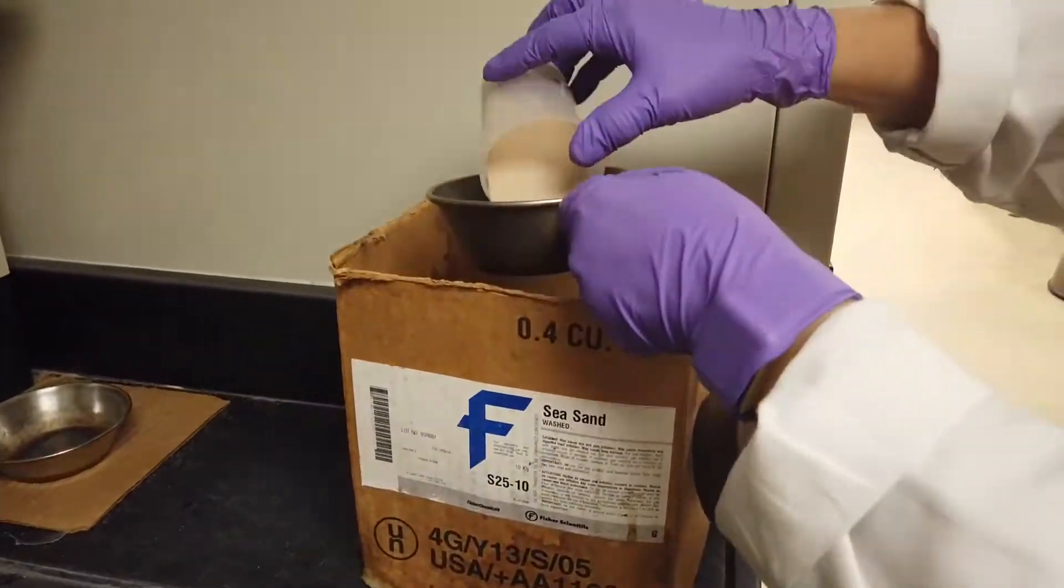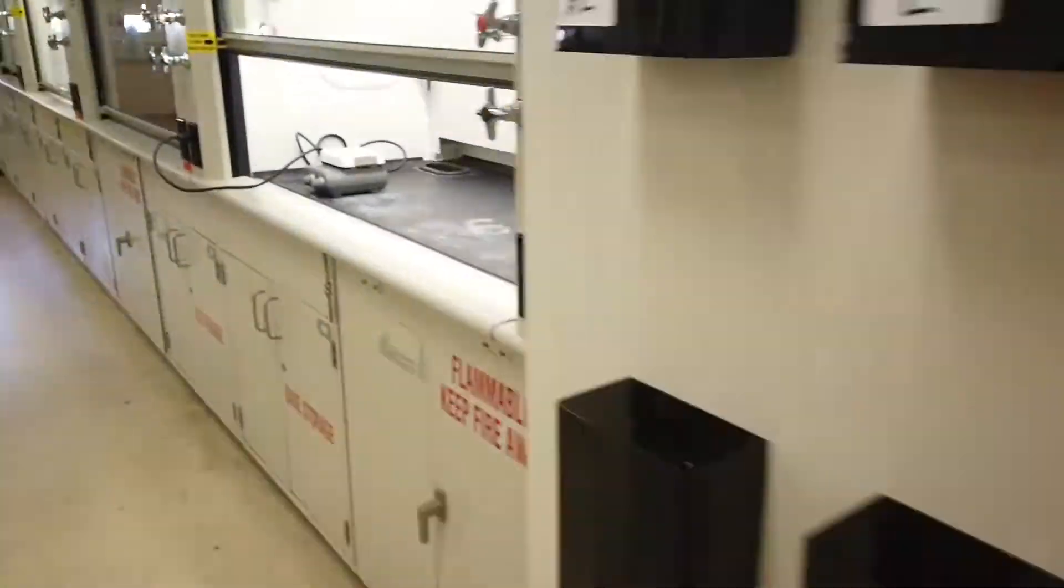Remember to fill your metal dish with sand to create a sand bath and place it on the hot plate to begin heating. Grab a ring stand and three finger clamp and bring it to your fume hood.